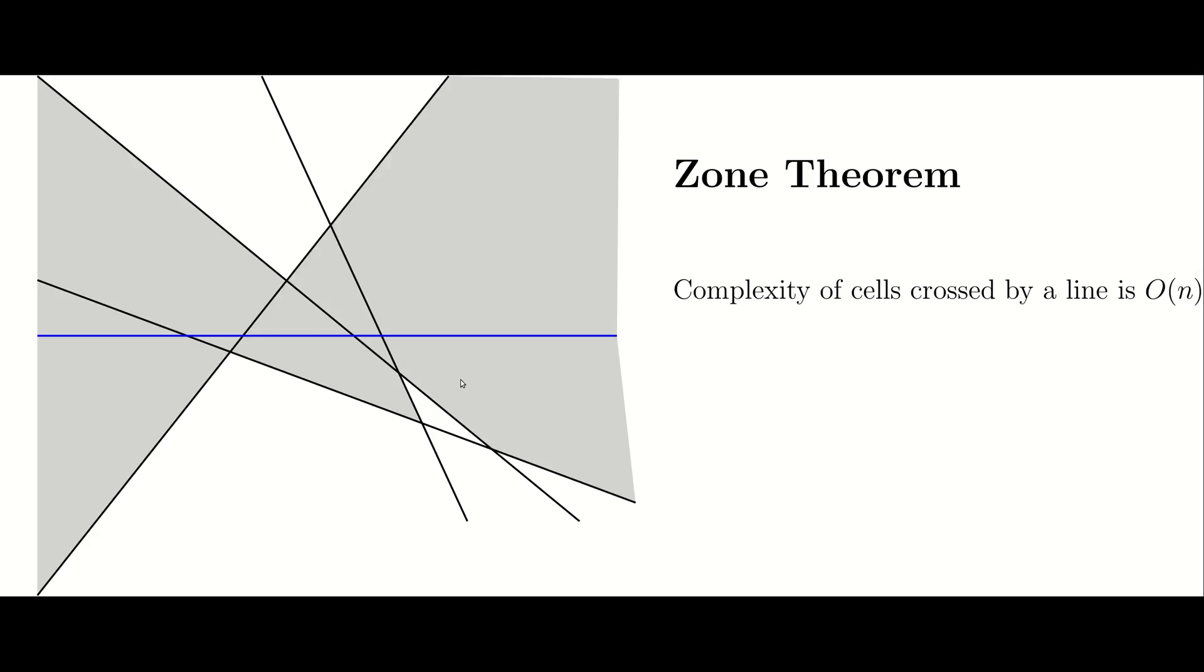Notice that this is a very powerful statement. For example, the rightmost cell in this picture has already linear complexity. This is because all the lines contribute with one edge to this cell.